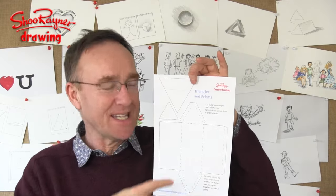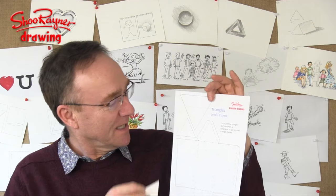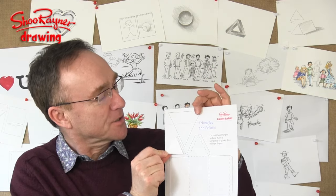Now you can download this PDF sheet and print it out and you'll find here, here's a little triangle, there's a bigger one.